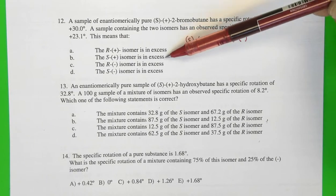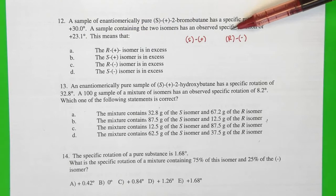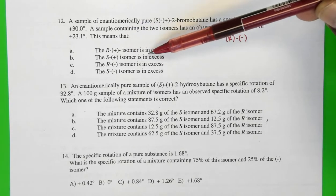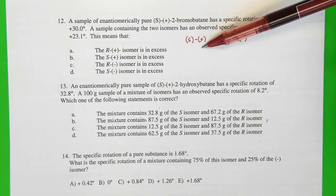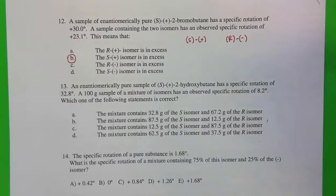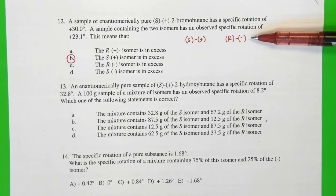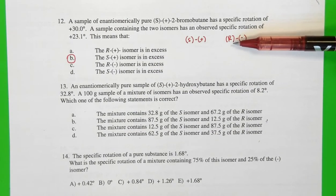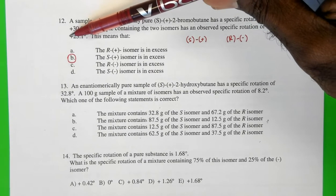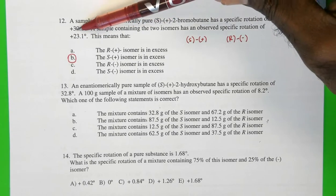Let's look at the options. The R(+) isomer is in excess - we do not have an R(+) isomer existing in this mixture. The S(+) isomer is in excess, and that is what you observe, so the answer must be B. But let's quickly look at the other two options. The R(-) isomer is in excess - you can see that the R(-) isomer is not in excess. If it were in excess, then the optical rotation would be negative. But the fact that it is positive means that the S(+) isomer is in excess.